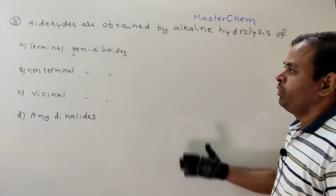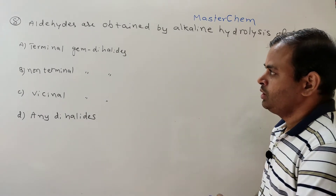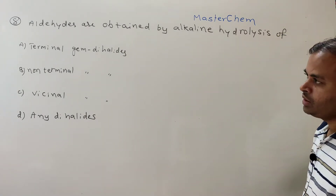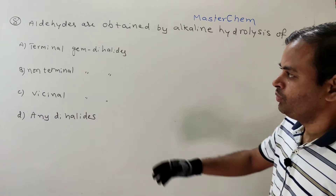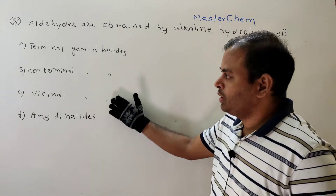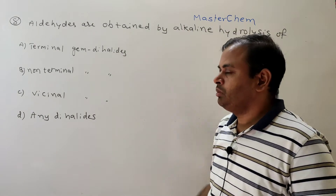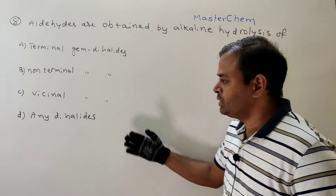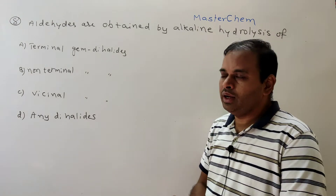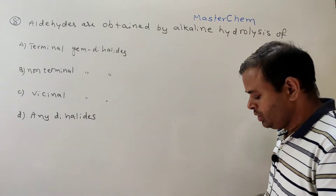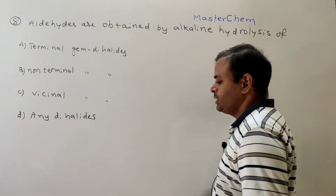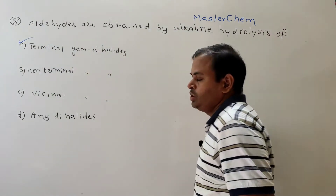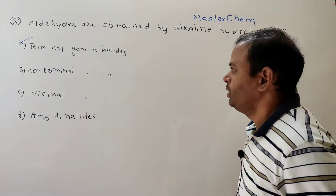First question: aldehydes are obtained by alkaline hydrolysis of which compound? The given options are terminal gem dihalides, non-terminal gem dihalides, vicinal dihalides, and any dihalides. Your answer must be terminal gem dihalides.